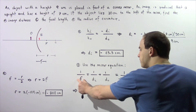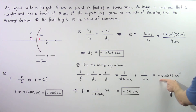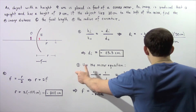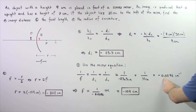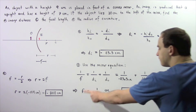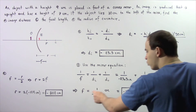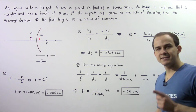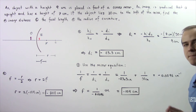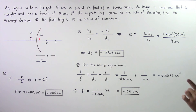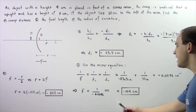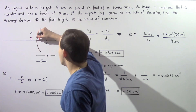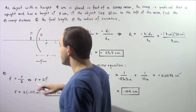We have 1 divided by the focal length F equal to negative 0.0096 cm⁻¹. Multiplying both sides by F and dividing both sides by negative 0.0096, the focal length equals 1 divided by negative 0.0096, which gives approximately negative 104 centimeters. This is our focal length — the distance from the center of the mirror to the focal point.